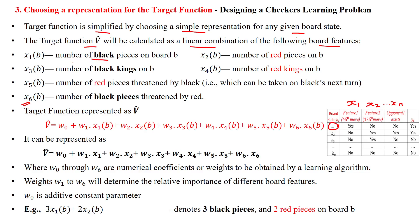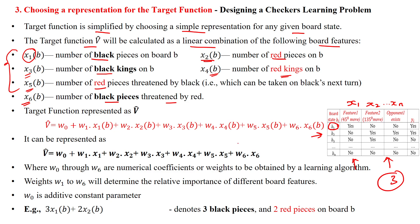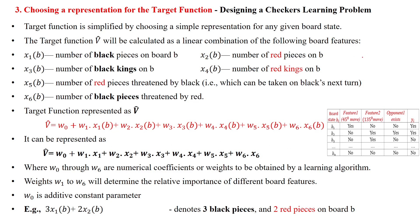The first feature x1 is the number of black pieces on the board. The second feature x2 is the number of red pieces on the board. The third feature is the number of black kings on the board. The fourth feature is the number of red kings on the board. x5 is the number of red pieces threatened by the black pieces, and x6 is the number of black pieces threatened by the red pieces in the next step. In this table, three features are shown randomly, but the checkers game actually has six features in this context.